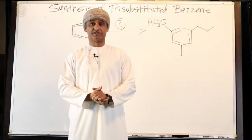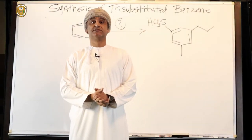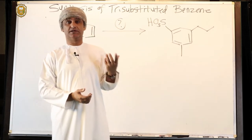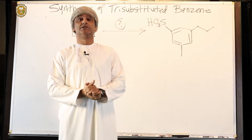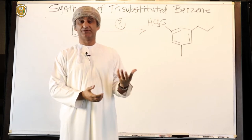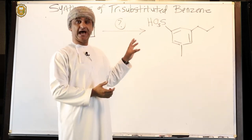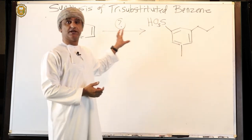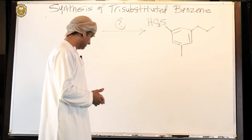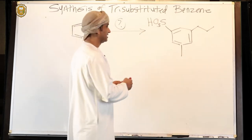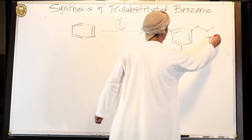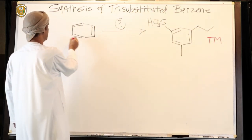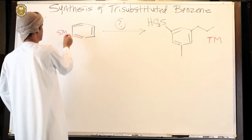To continue our discussion of the synthesis of tri-substituted benzene, let's take another example. Remember what we discussed before is we should adopt the backward approach on how to synthesize a specific target molecule from a specific starting material. In this case, this is our target molecule, and this is the starting material, which is benzene.